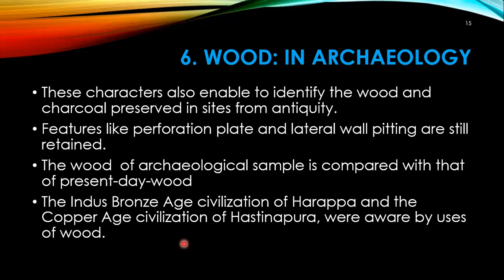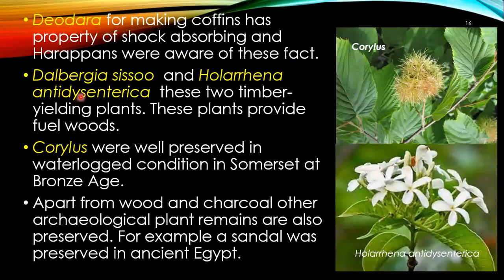Wood in Archaeological Studies: anatomical characters enable identification of wood and charcoal preserved from antiquity. Features like perforation plates and lateral wall pitting are still retained, which are the main indicators and markers in wooden anatomy for archaeological studies. The wood of archaeological samples is compared with that of present-day wood. The Indus Bronze Age civilization of Harappa and the Copper Age civilization of Hastinapura were aware of the uses of wood. For example, Dalbergia for making pulleys has the property of shock absorption.